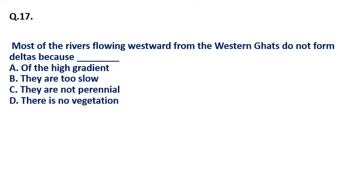Question 17: Most of the rivers flowing westward from the Western Ghats do not form deltas because — (a) of high gradient, (b) they are too slow, (c) they are not perennial, (d) there is no vegetation? The correct answer is option A — because of the high gradient, they do not form deltas.